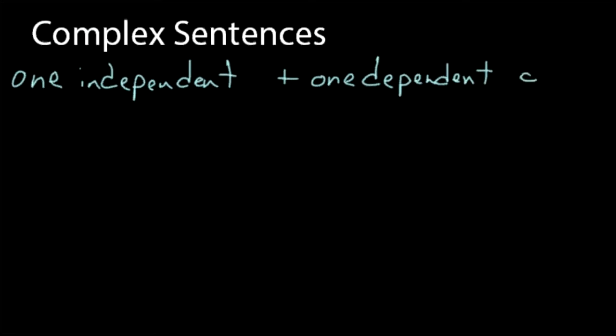A complex sentence has at least one independent clause and at least one dependent, sometimes called subordinate, clause.